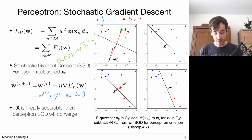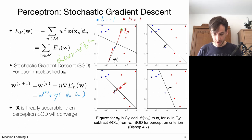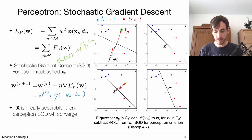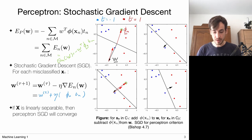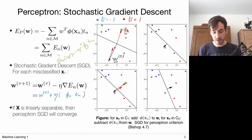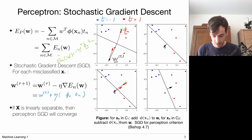The update rule tells me that my new weights are obtained by taking my original weights and adding the data vector with some learning rate eta times TN. If my point belongs to the positive class, TN is plus one, so I add it; if it belongs to the negative class, TN is minus one, so I subtract it. This gives a very simple update rule. I have the weight at time step tau, I have a misclassified data point, and I add this data point to my weight vector, giving me the updated weight at tau plus one.